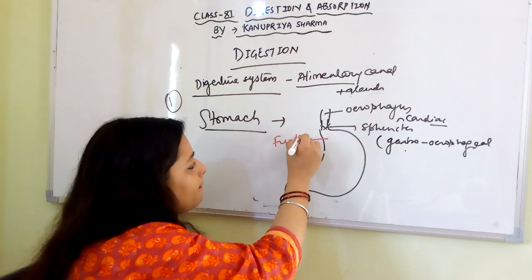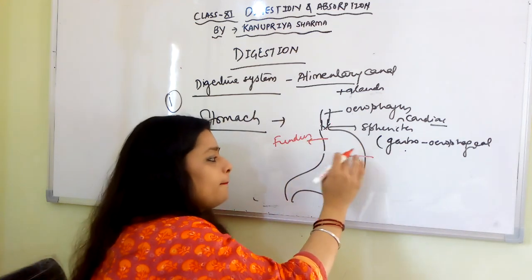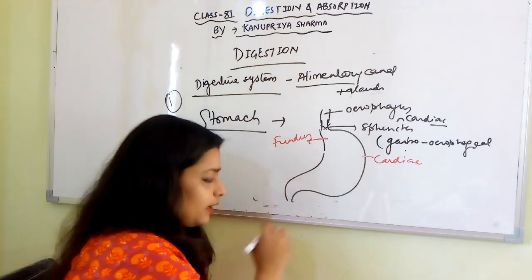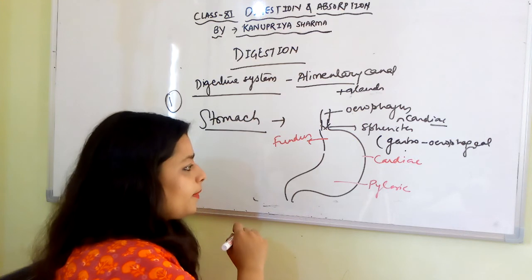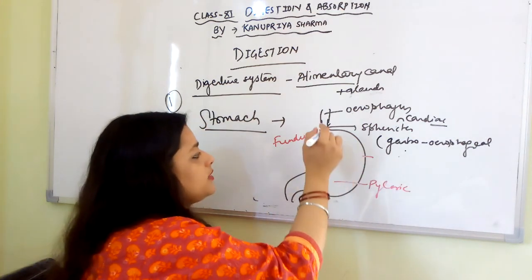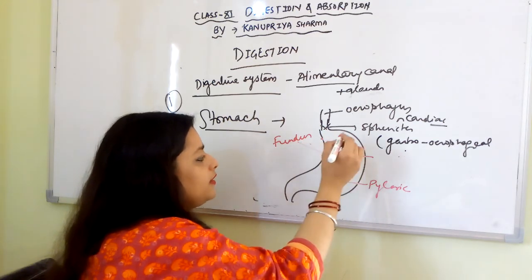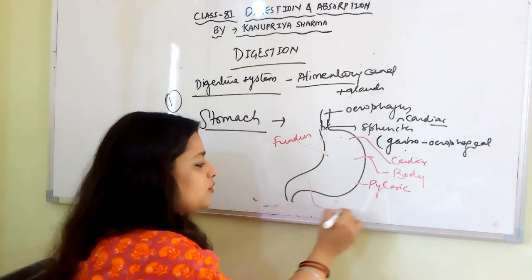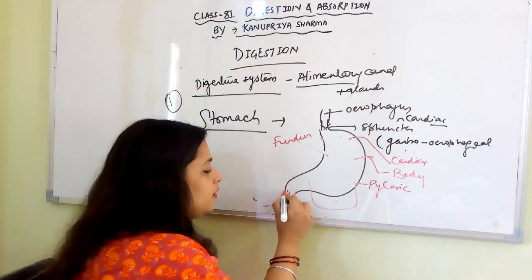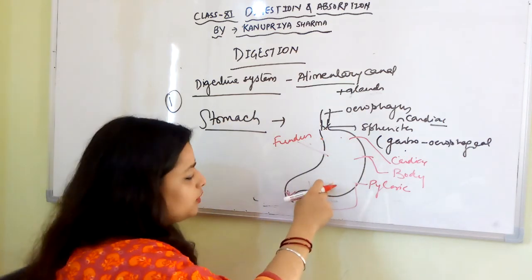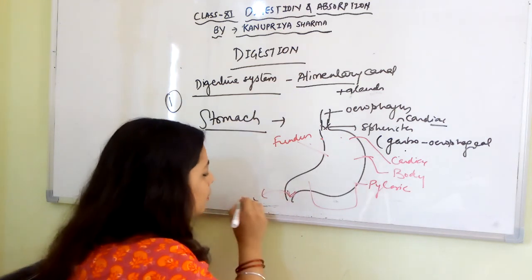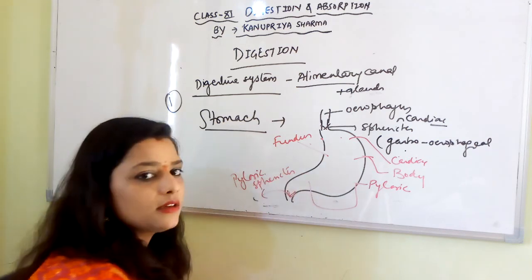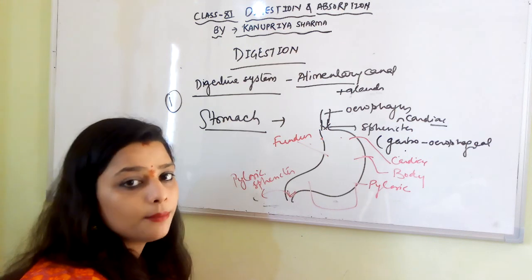The stomach has four portions: cardiac, fundus, body, and pyloric. The cardiac portion is near the esophageal entry, fundus is upward, then the body is the main portion, and the pyloric is the lower portion. After the food is worked upon in the stomach, it moves to the small intestine controlled by the pyloric sphincter, which again regulates the required amount going to the next organ.